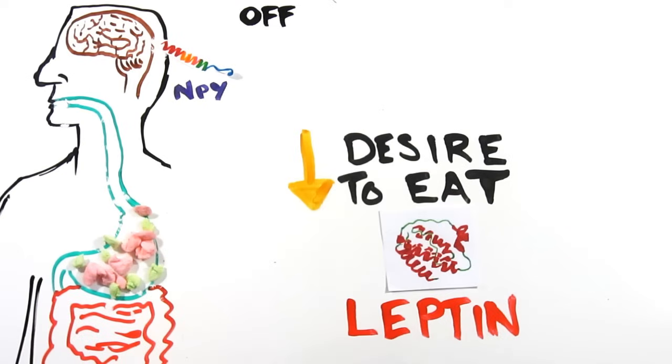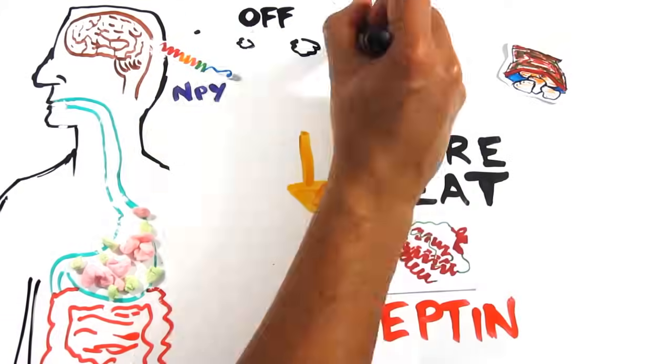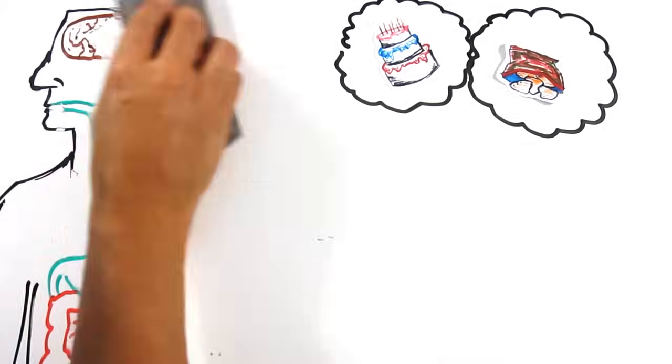But if this hunger regulation system is in place, why can't we say no to that piece of cake or second helping of chips?